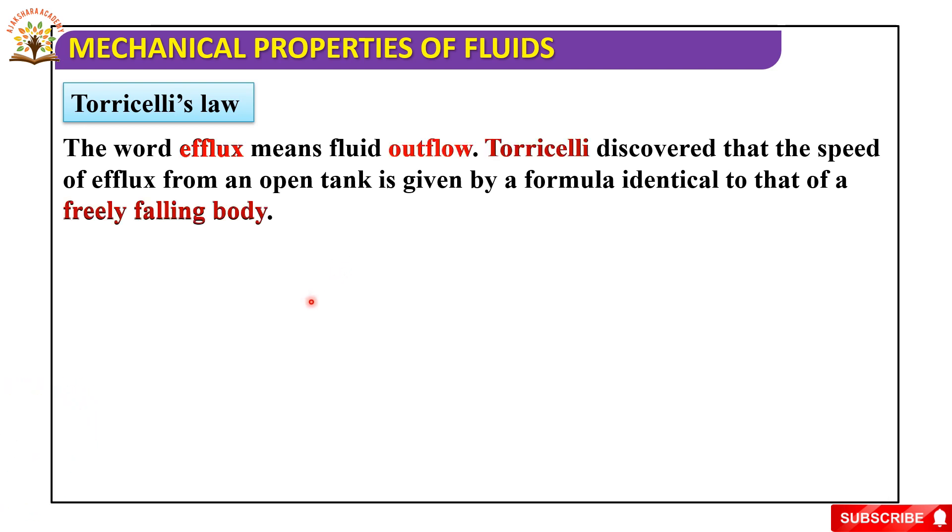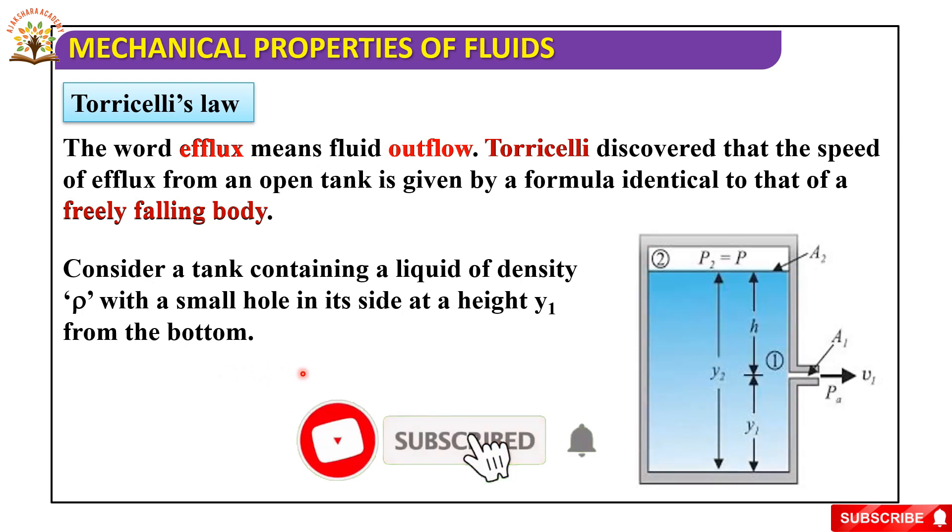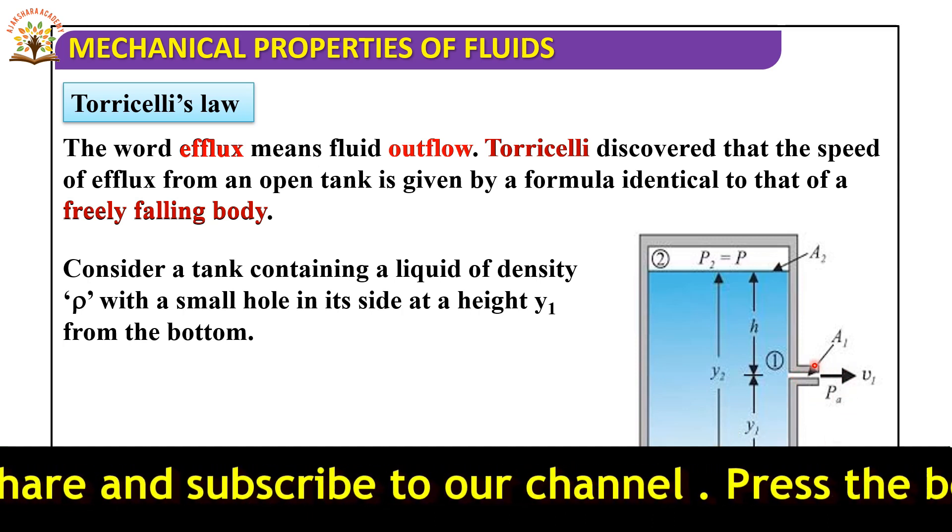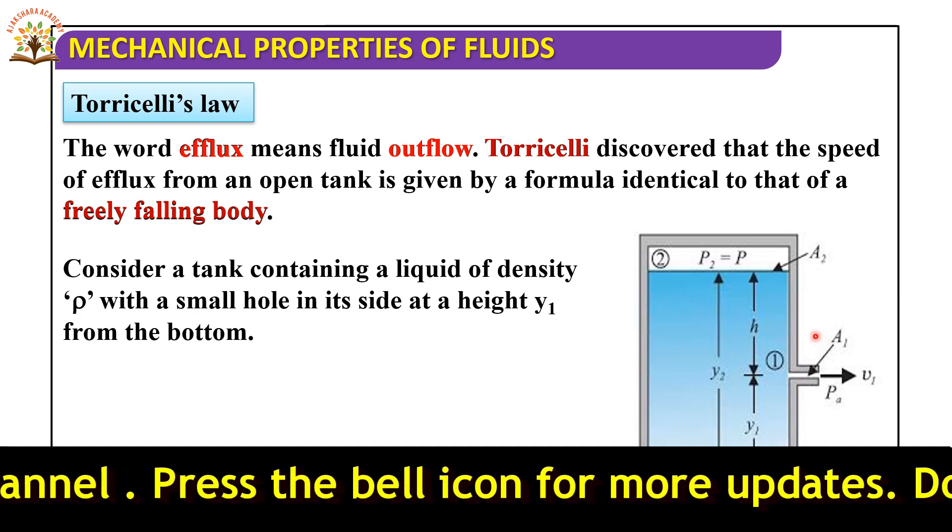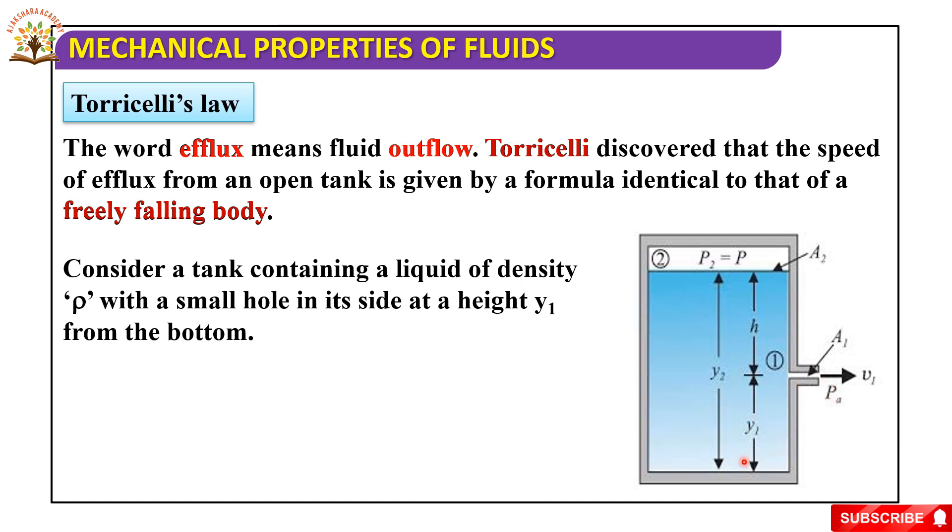Now consider a tank containing a liquid of density rho with a small hole in its side at a height y1 from the bottom. See here, it is a tank containing a liquid of density rho with a small hole in its side at a height y1 from the bottom. This is the height from the bottom, from small hole to bottom height that is y1.